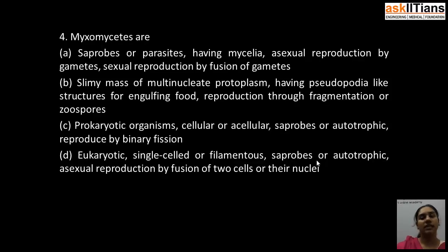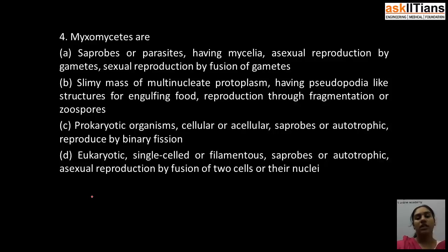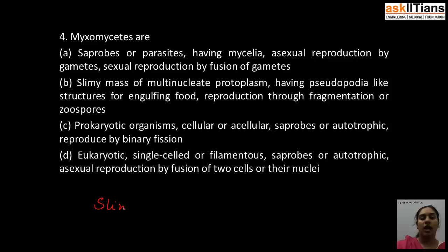The next question is: Myxomycetes are — A) saprobes or parasites, having mycelia, sexual reproduction by fusion of gametes; B) slimy mass of multinucleate protoplasm, having pseudopodia-like structure for engulfing food, reproduction through fragmentation or zoospores; C) prokaryotic organisms, cellular or acellular saprobes or autotrophic, reproduced by binary fission; D) eukaryotic single-celled or filamentous, saprobes or autotrophic, sexual reproduction by fusion of two cells or their nuclei. The correct answer is B: Myxomycetes are a slimy mass of multinucleate protoplasm, having pseudopodia-like structure for engulfing food, reproduction through fragmentation or zoospores.